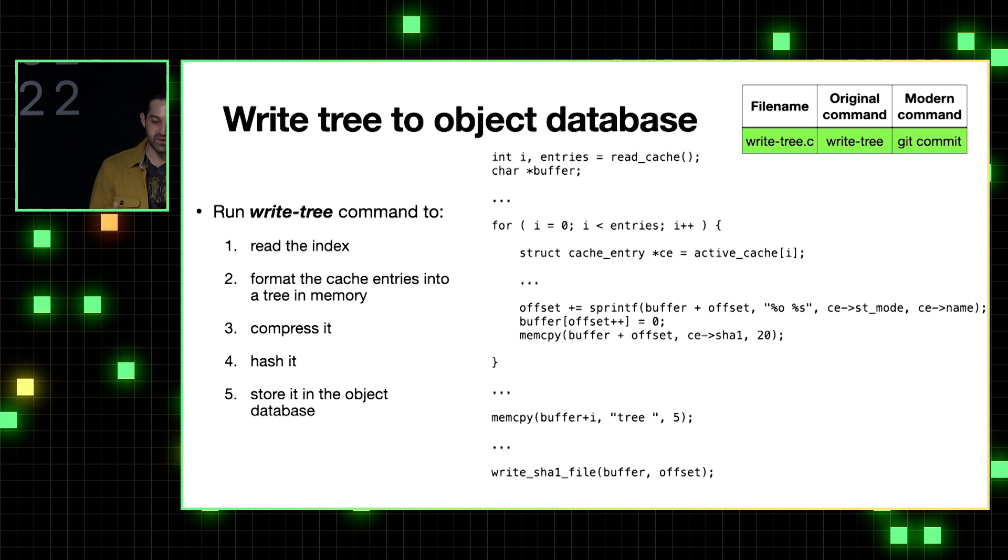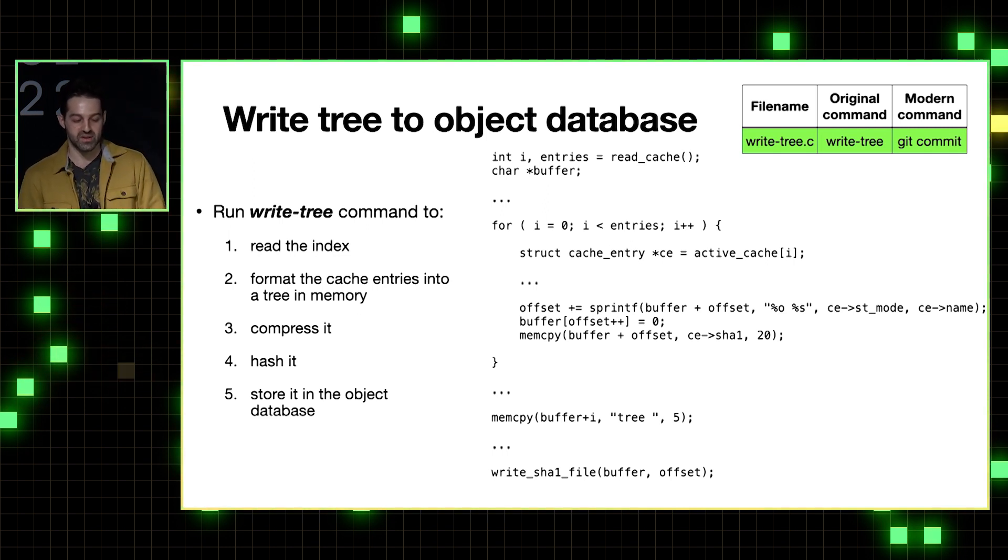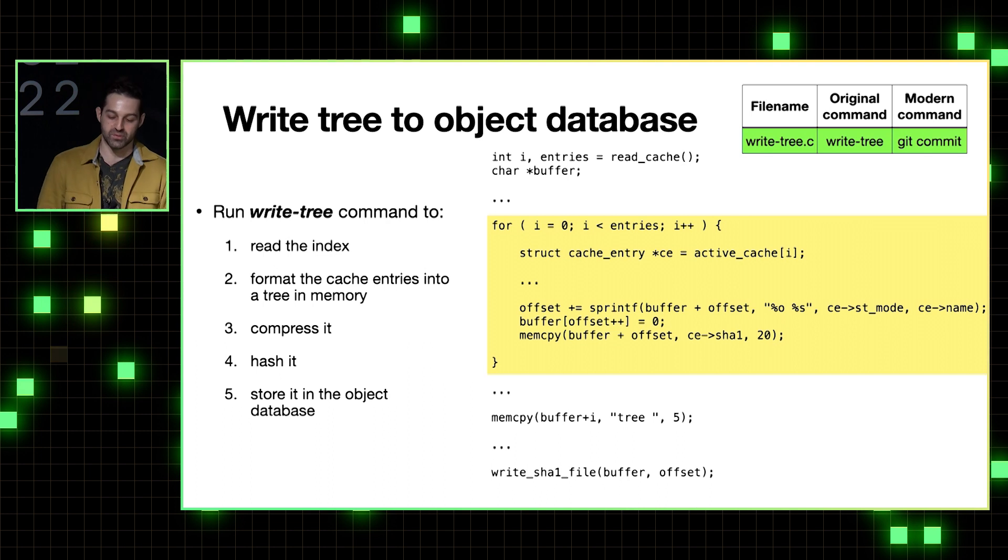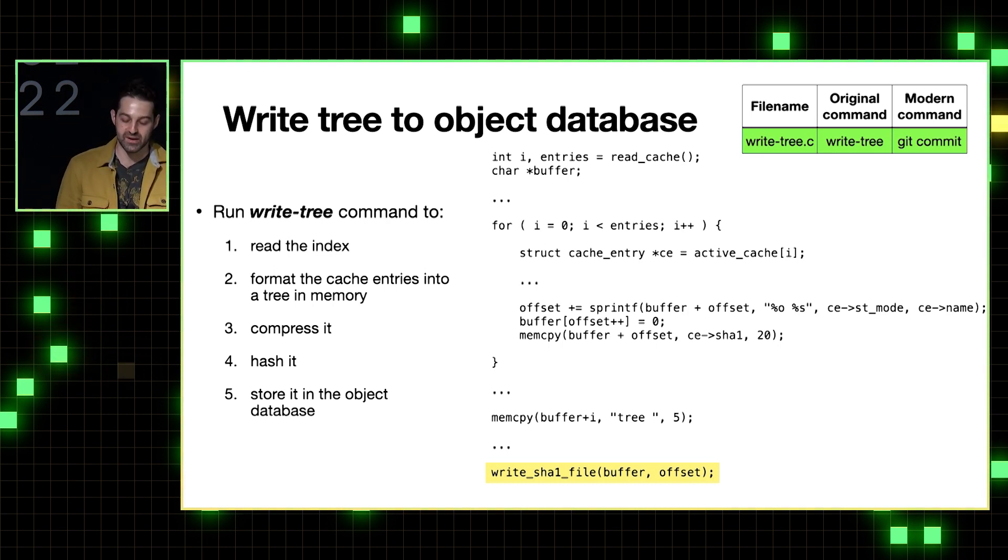So now it's time to build up our proper tree and write it to the object database. And that's done with the right tree command. And so the code for this starts by reading our cache entries from the index file from the staging area, and then looping through those and building them up into the proper tree structure that we saw on the previous slide. And lastly, this right SHA1 file function takes care of compressing the tree, hashing it, and storing it in the object database. And we already saw how those three things work for a blob, so we don't have to go over them again for a tree.